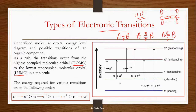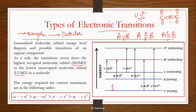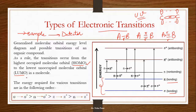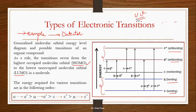When light falls on the sample, the sample interacts with the light and there will be absorbance — that is what we detect under UV. That interaction helps in transiting electrons from one electronic level to another. Electrons may jump from HOMO (bonding orbitals, which are occupied) to LUMO (antibonding orbitals). So the electron transits from bonding to anti-bonding — from HOMO to LUMO.